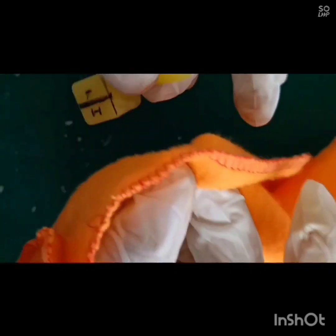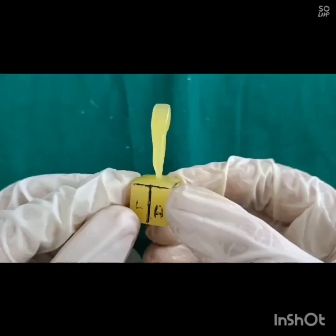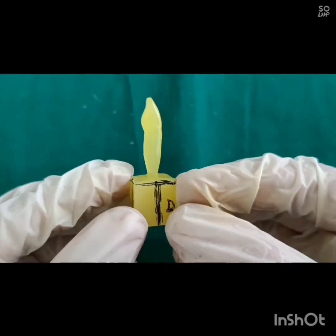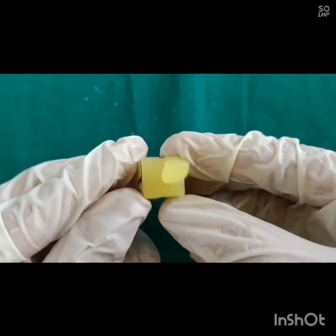One important point about the root is, apical one-third of the root is tilted distally. You can see the distal tilt of the root in the picture.